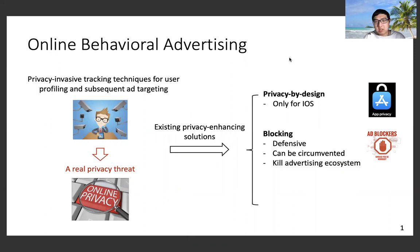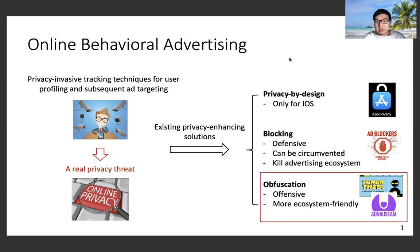The third solution is obfuscation, such as AdNauseam and TrackThis. Obfuscation tools are usually offensive and they are more ecosystem-friendly compared with blocking tracking tools. However, existing obfuscation approaches are not principled and stealthy.